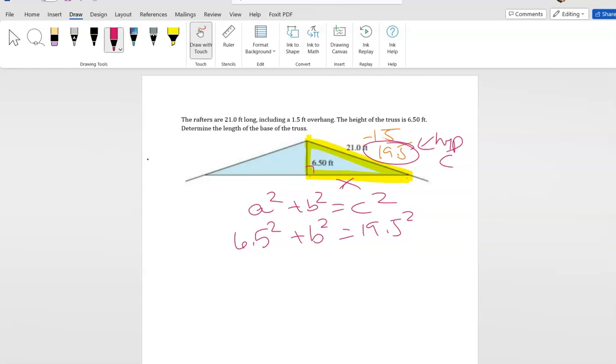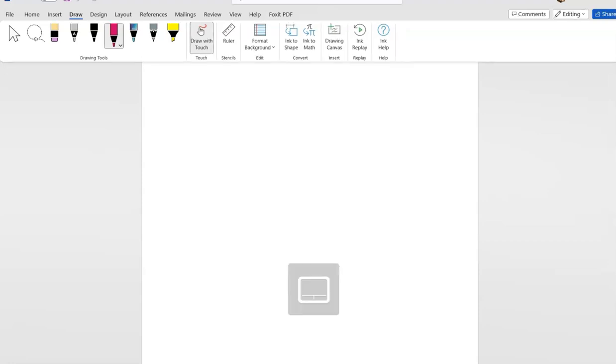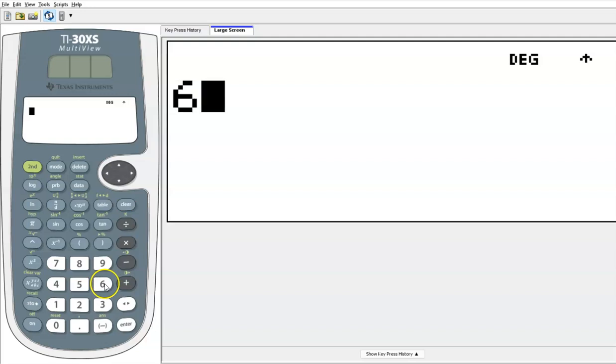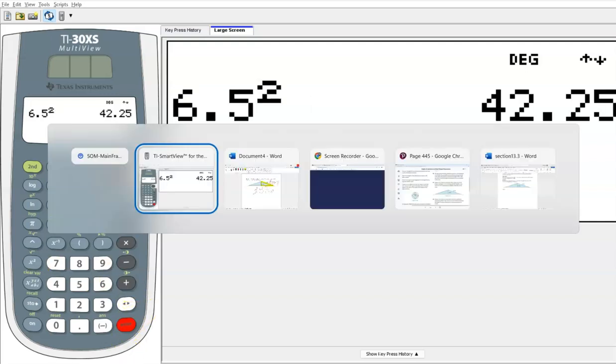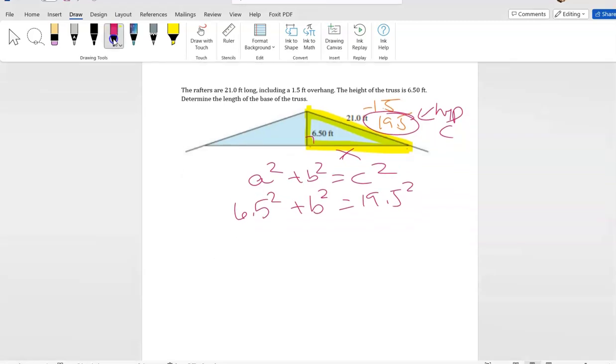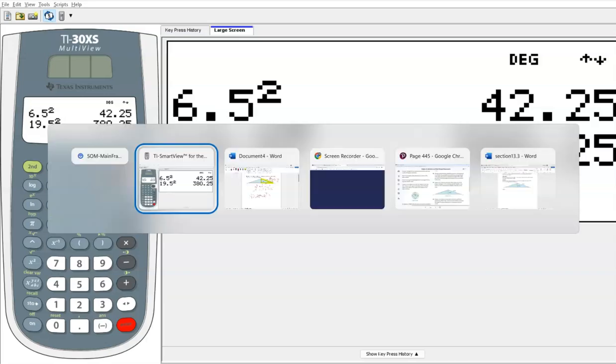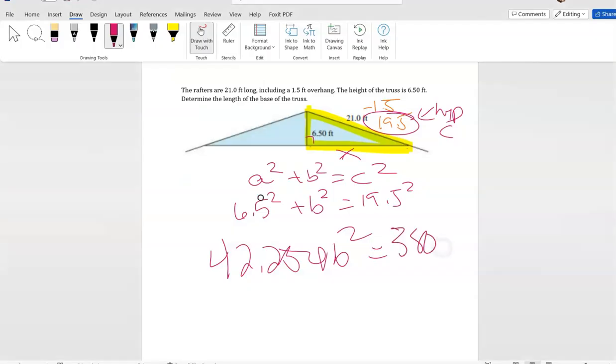Now that I've got this written out, I need to get my calculator out and do some arithmetic. So I'm gonna come over here and I'm gonna first do both of these. So I'm gonna do six and a half squared. So this is 42.25, so 42.25 plus b squared equals, and then I would have over here 19.5 squared, which is 380.25.